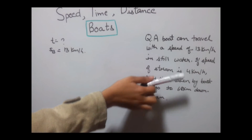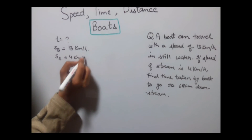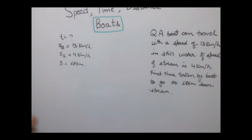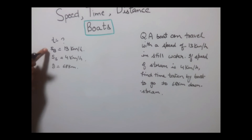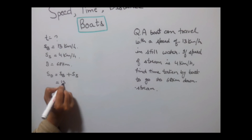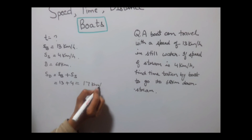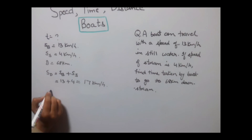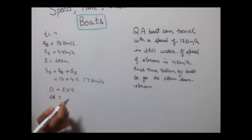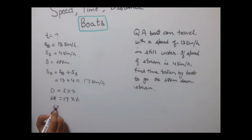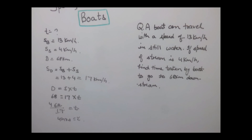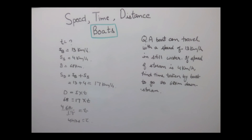Speed of stream SS equals 4 km per hour and distance is 68 km. For downstream, both speeds add up: speed of downstream equals SB plus SS equals 13 plus 4 equals 17 km per hour. Using the basic formula, distance equals speed into time: 68 equals 17 × T, so T equals 68 divided by 17 equals 4 hours. For more tutorials and questions, stay tuned with IndiaEDU.com.